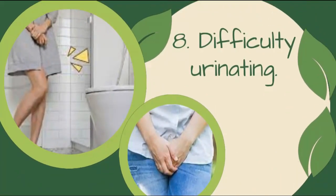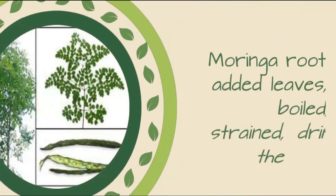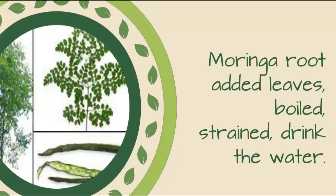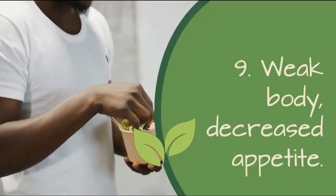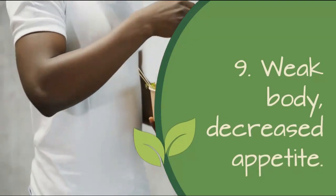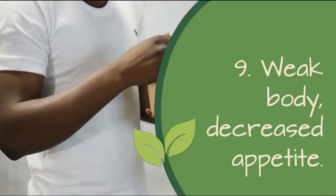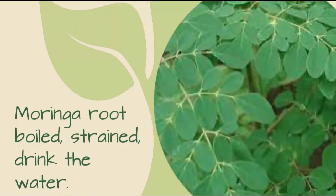8. Difficulty Urinating: Moringa root with added leaves, boiled, strained, and drink the water. 9. Weak body, decreased appetite: Moringa root boiled, strained, and drink the water.